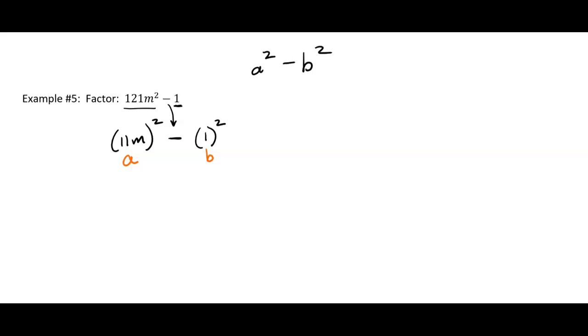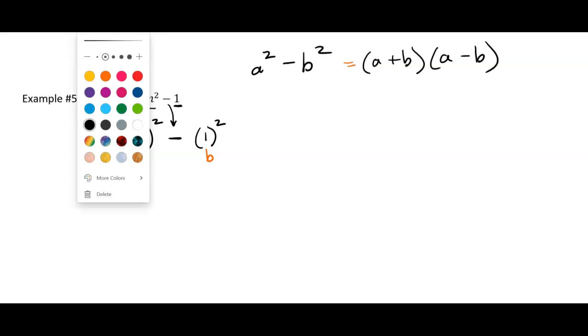So I have my a, and I have my b. It fits the form a squared minus b squared. And it's going to factor into, one will be a plus b, and the other will be a minus b. I usually put the plus 1 first, but it doesn't matter. So in my answer,